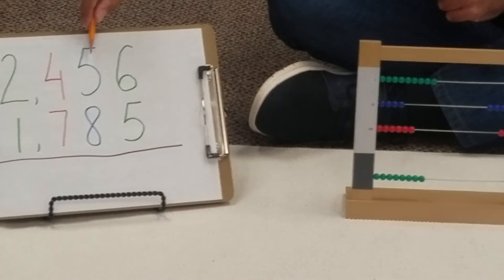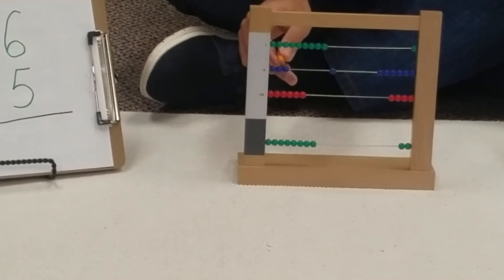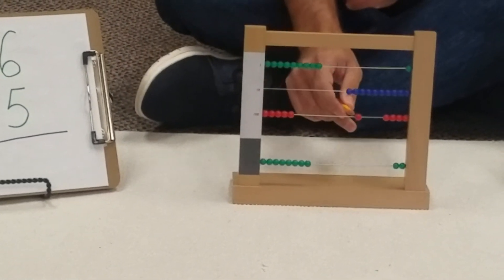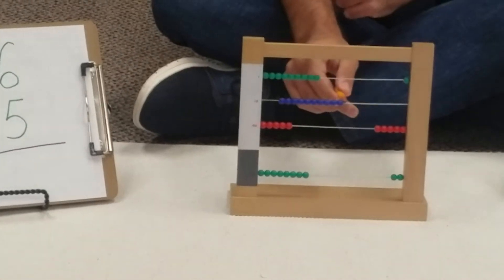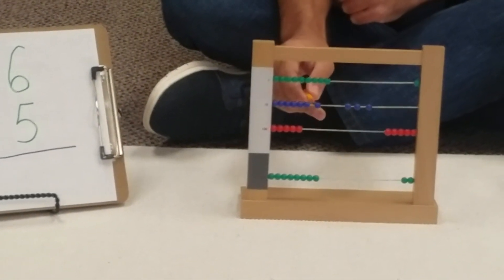Then we need to find 8 tens. So we're going to start one, two, three, four tens, and then we add five, six, seven, eight tens.